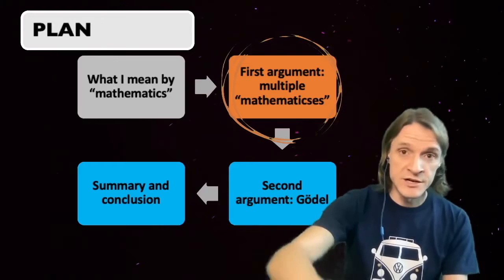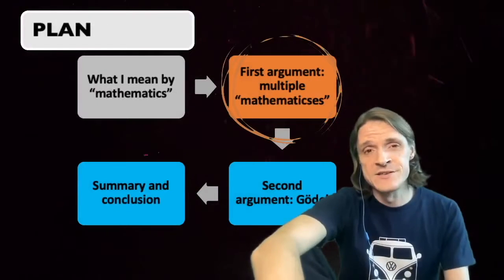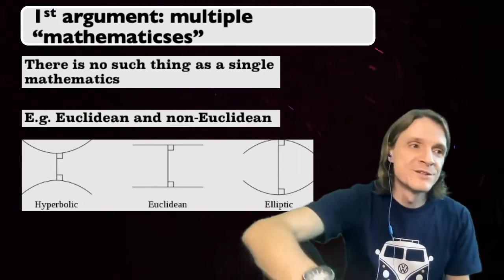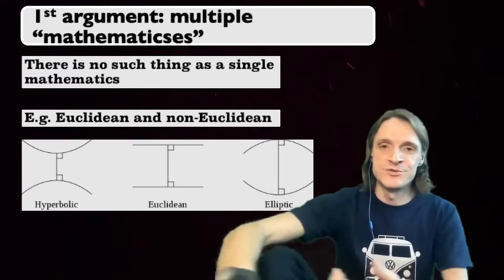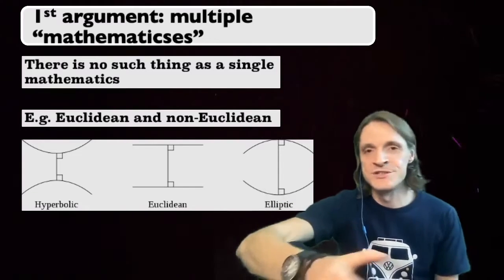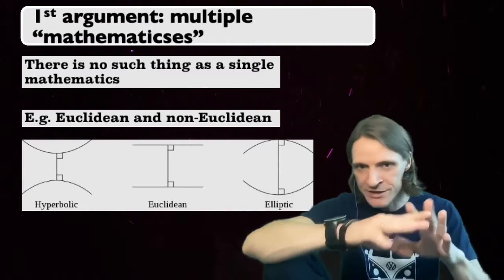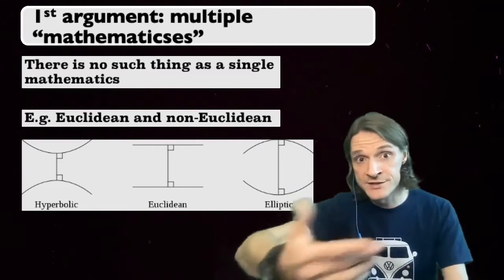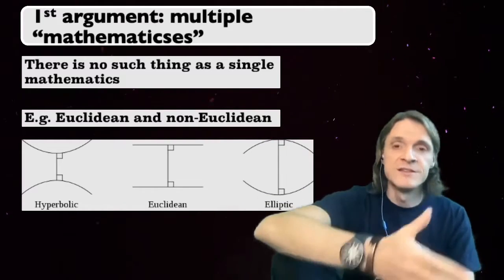So my first argument is that there is no such thing as a single mathematics. Mathematics is not a single axiomatic system. It is a collection of multiple axiomatic systems, or if you will, multiple mathematics. The common example is Euclidean and non-Euclidean geometry. They are based on different assumptions, different axioms. Euclidean geometry assumes that everything is happening on a perfectly flat surface. Non-Euclidean geometries do not make such an assumption. They assume that there is a curvature in the surface. For example, the surface is a sphere.